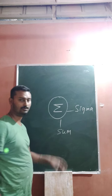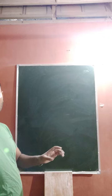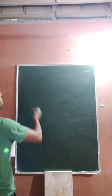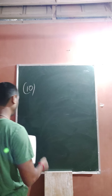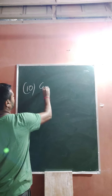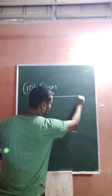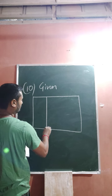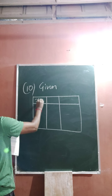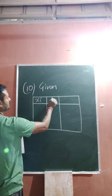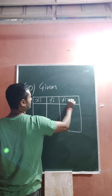Sigma is sometimes also known as summation. Now I will solve question number 10. Find the mean of the following observations. The given table has two columns, but you just make it three columns: the first column is xi, the next one is fi, and the third one is fi·xi.